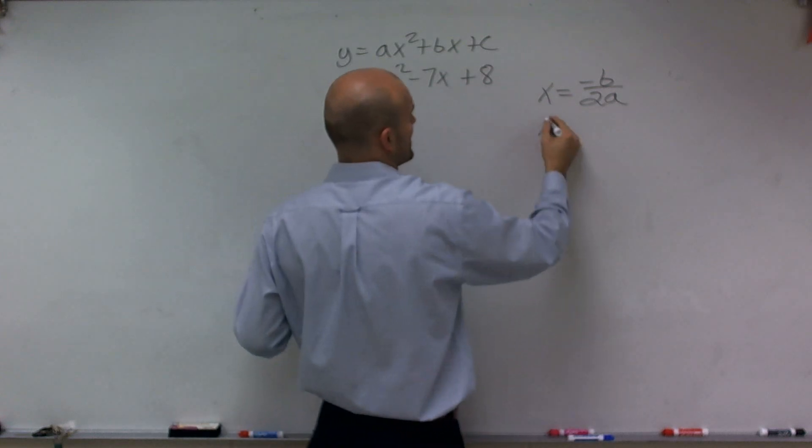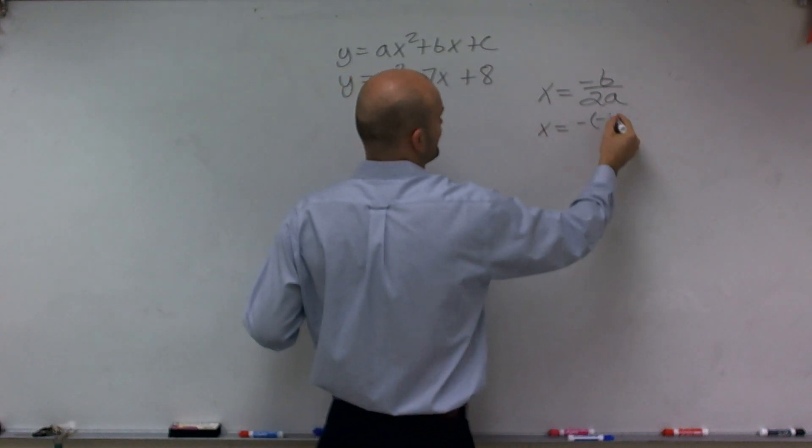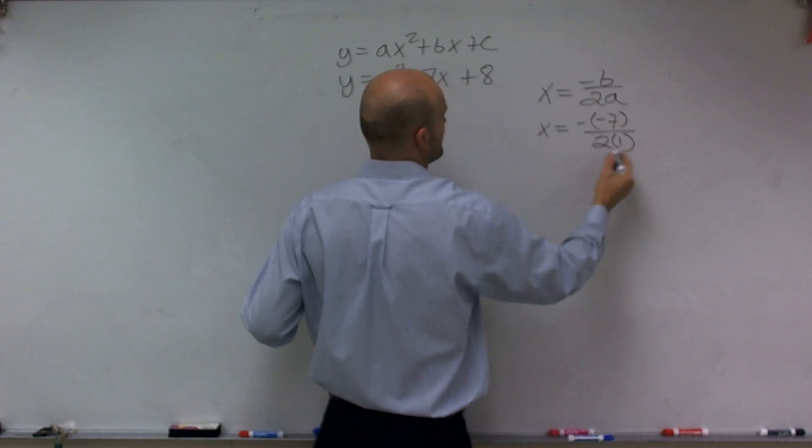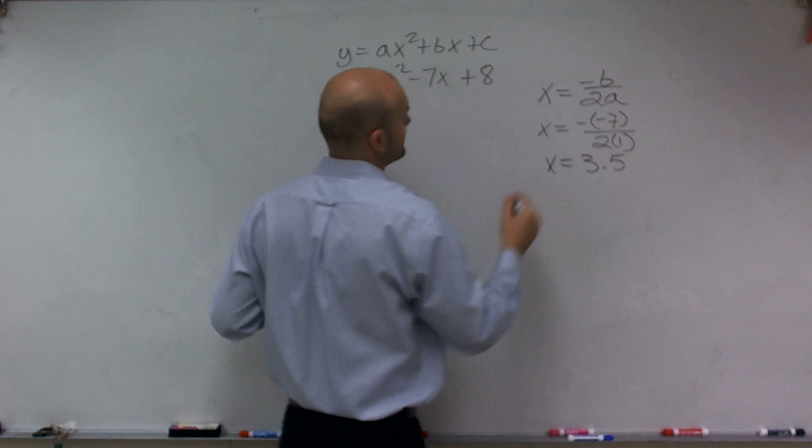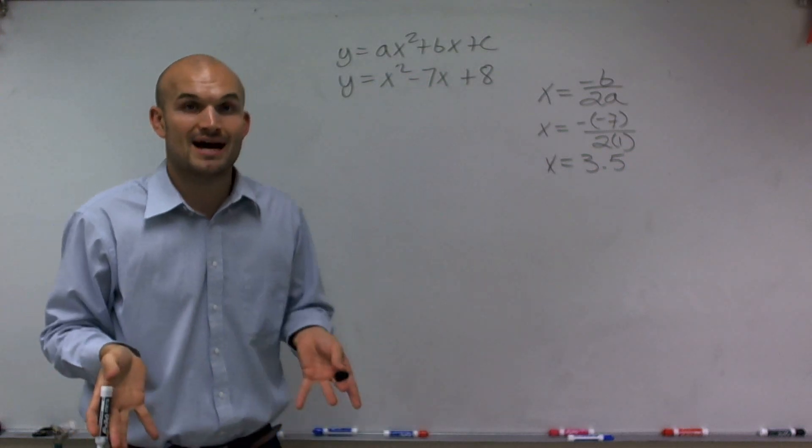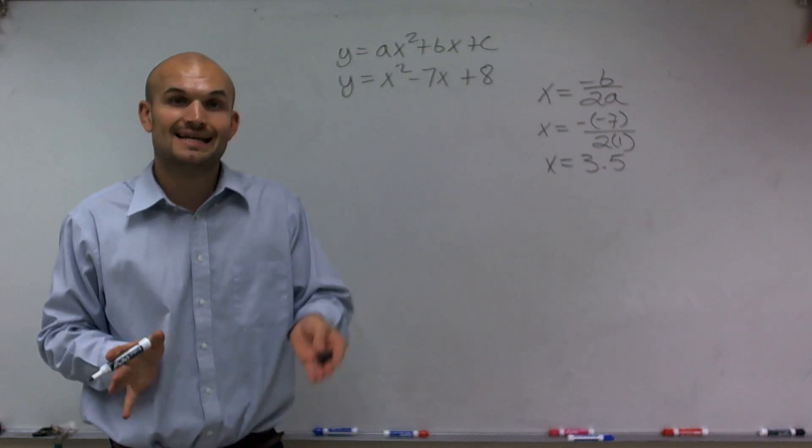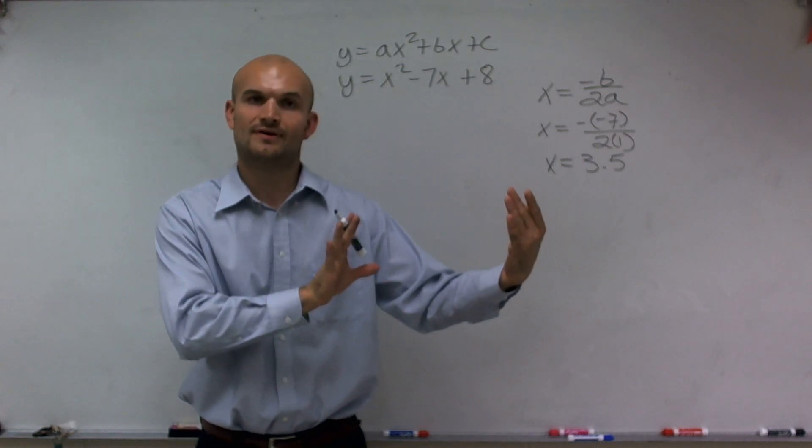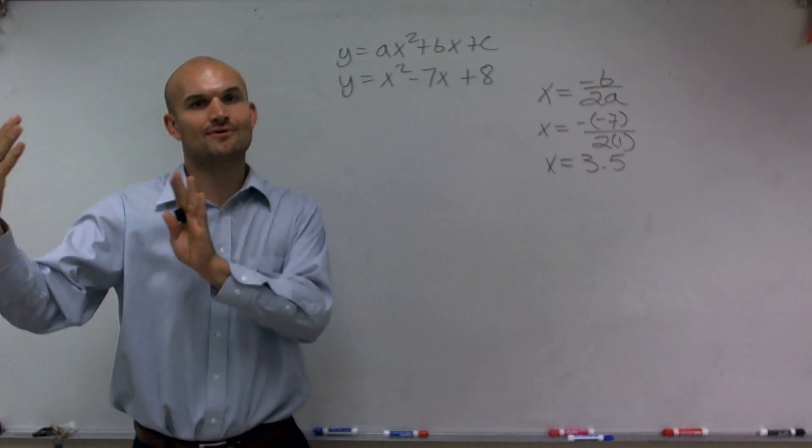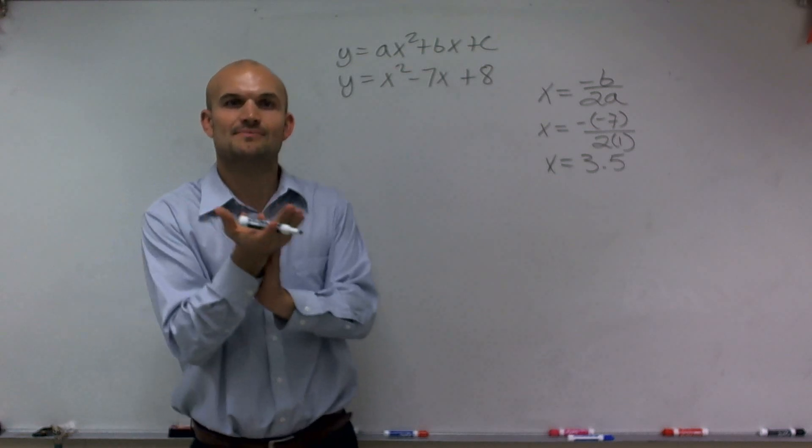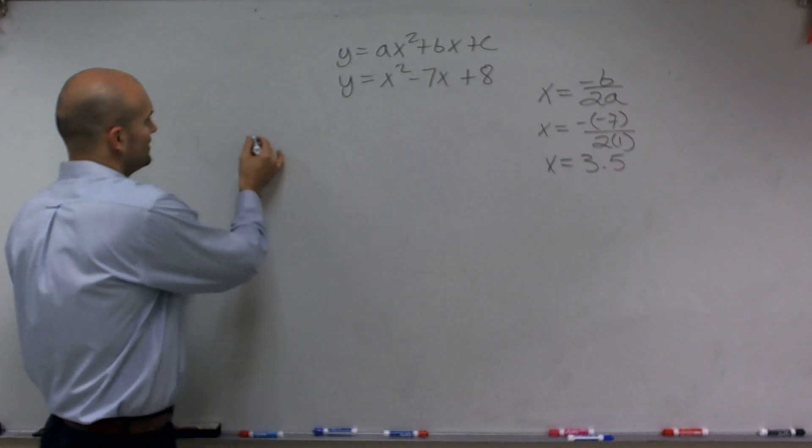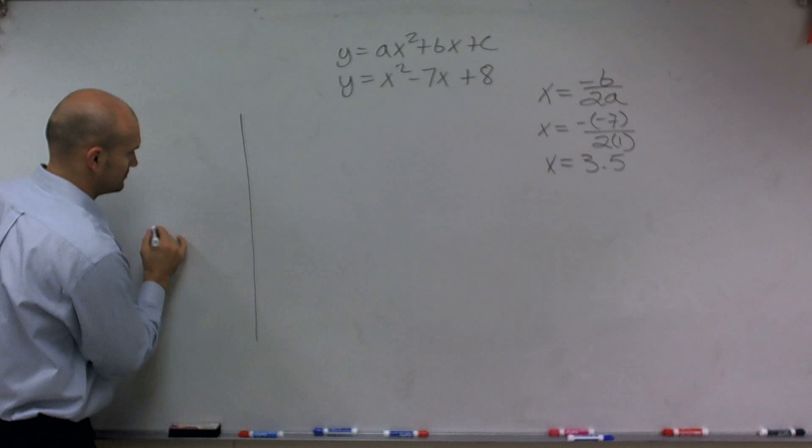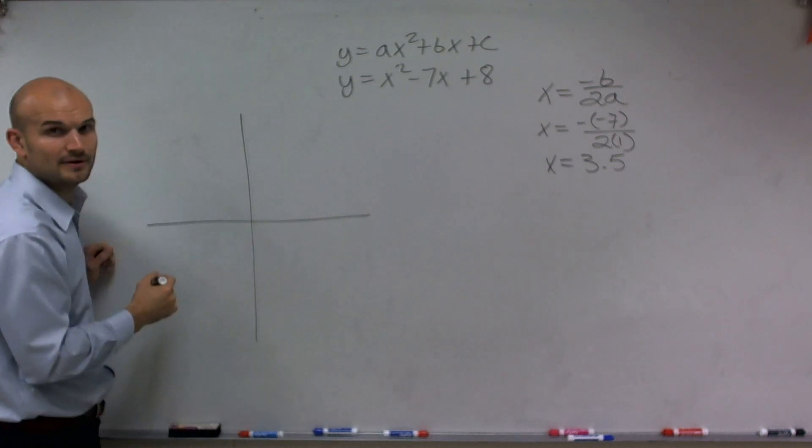So when I plug this in, I have x equals negative negative 7 divided by 2 times 1. And that ends up equaling x equals 3.5. So what that means is that means my graph is symmetrical about the line 3.5, meaning all the points that are on the left of 3.5, if I just kind of put them over on that right-hand side, they're going to be exactly symmetrical about this line.